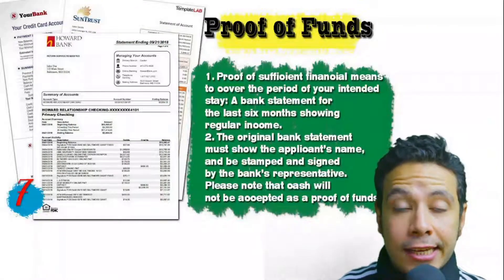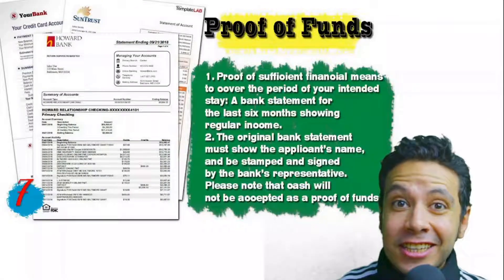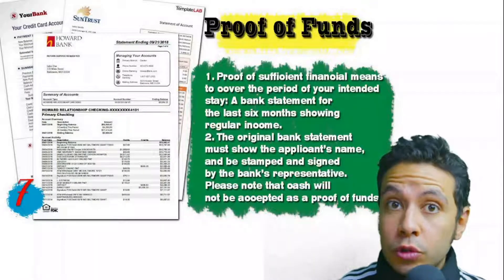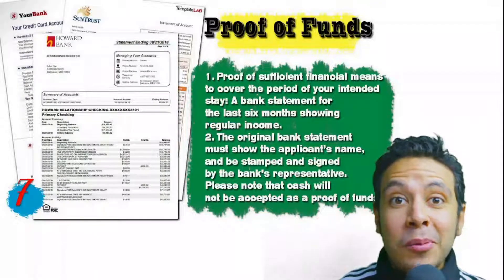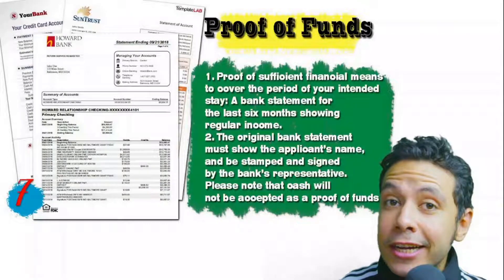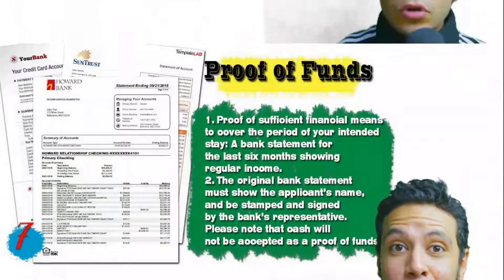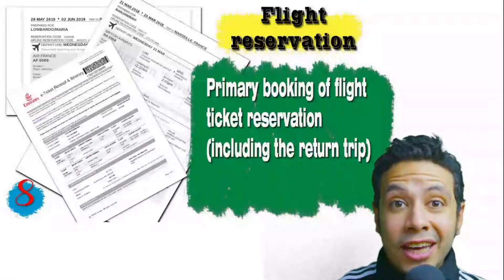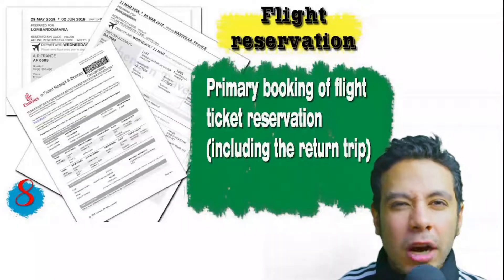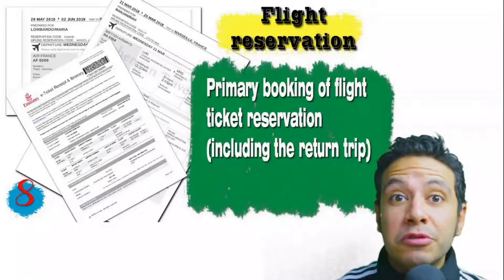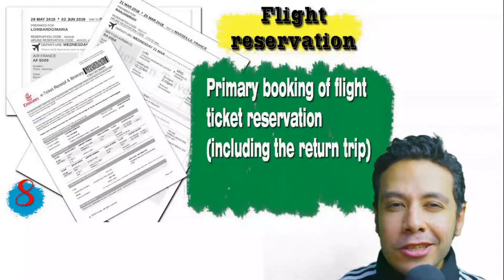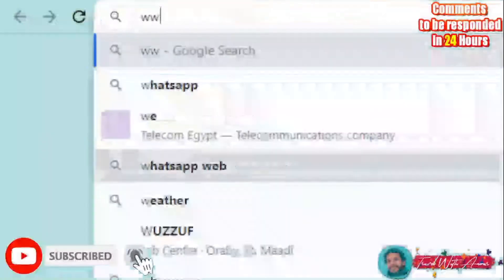You must also provide proof of sufficient funds: a bank statement covering at least six months, showing your name, signed and stamped by bank representatives. Remember, cash is not accepted as proof of funds. You also need a flight reservation — an initial booking is usually acceptable, though in some cases a confirmed booking is required — and it must include a return ticket.